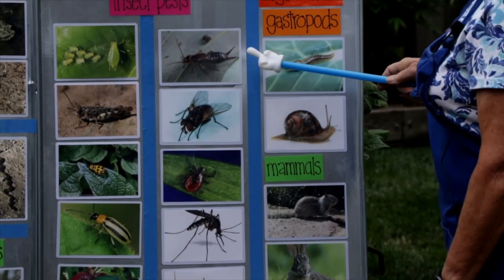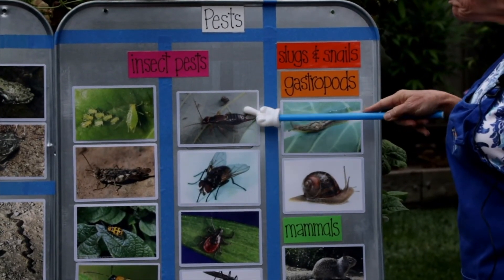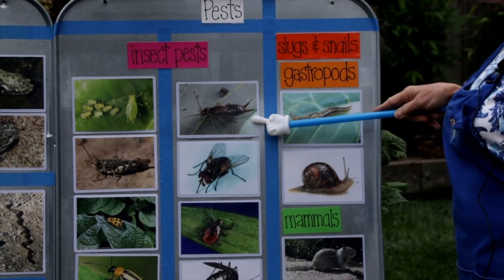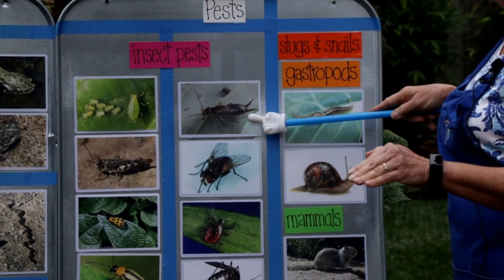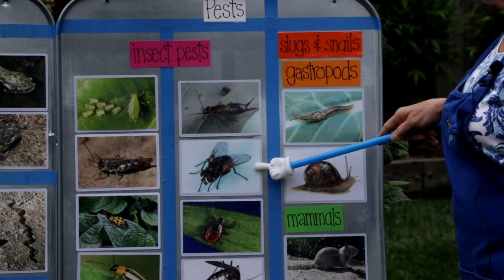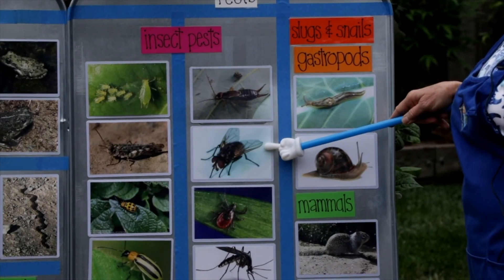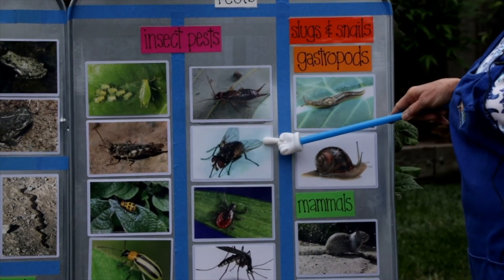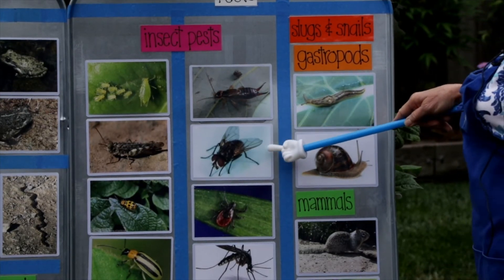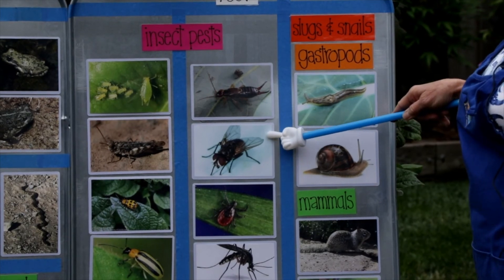More of the pests we have is an earwig. You might have noticed these guys — they appear kind of mean and are also called pincher bugs. They tend to come out at night and can just mow down seedlings when they're just sprouting. Then there's the housefly — you don't really want her laying eggs, as those maggots can be in your compost or decaying fruits and vegetables.